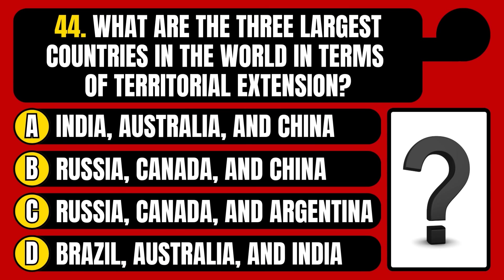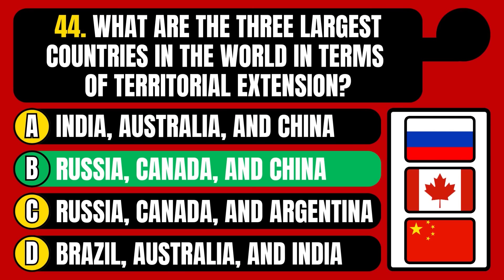What are the three largest countries in the world in terms of territorial extension? India, Australia, and China; Russia, Canada, and China; Russia, Canada, and Argentina; or Brazil, Australia, and India? The correct answer is option B, Russia, Canada, and China.